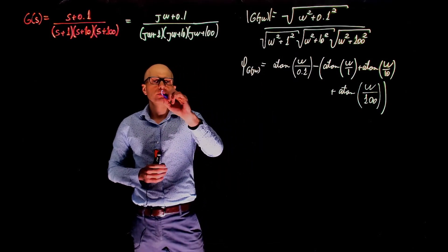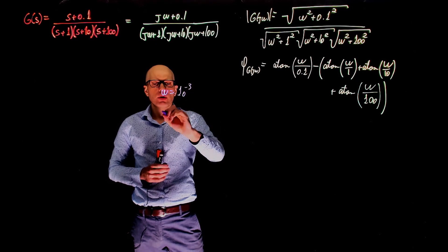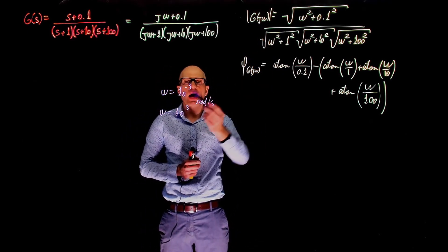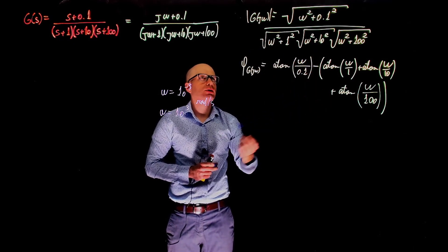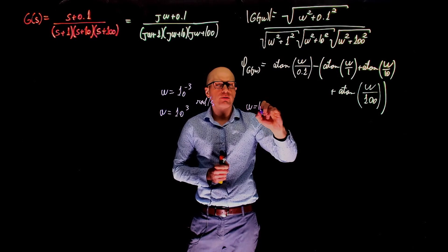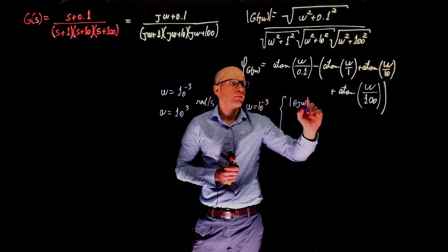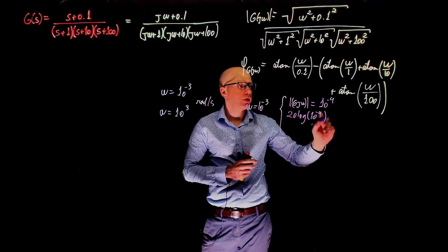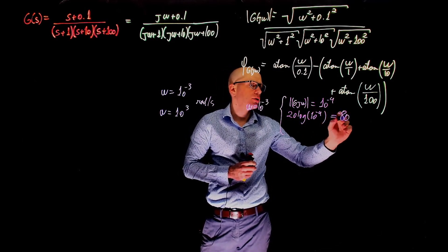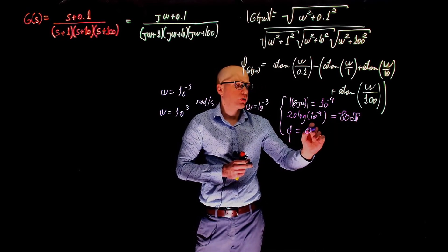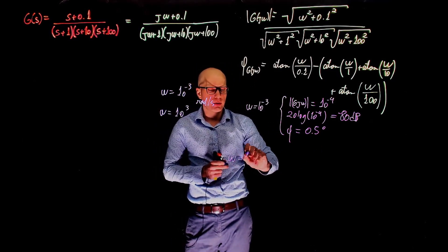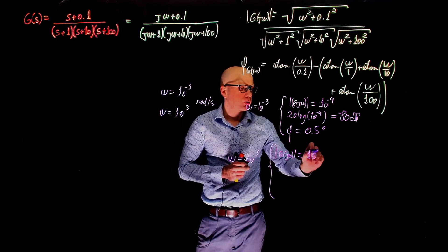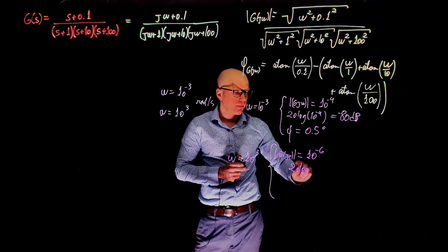Now we wish to evaluate this at two particular frequencies: ω = 10⁻³ and ω = 10³ radians per second. We have phase and magnitude as a function of ω, so we can simply substitute ω into the expressions. For ω = 10⁻³, we get the magnitude as 10⁻⁴, or 20·log(10⁻⁴) = negative 80 dB.